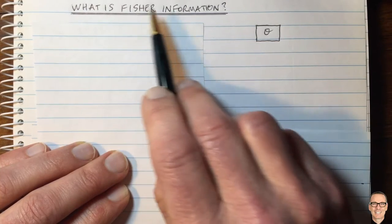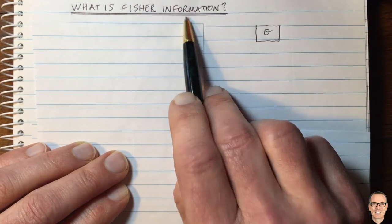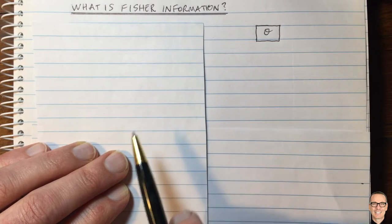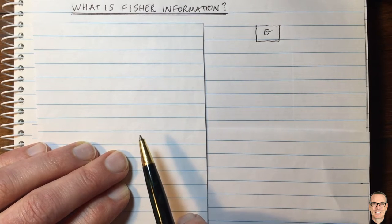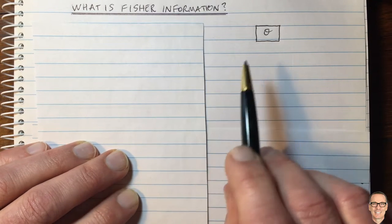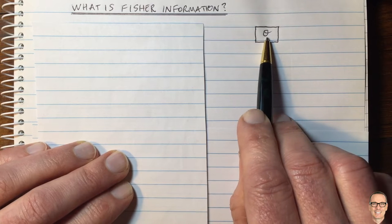What is Fisher information? It's a way of measuring the information content in a set of measurements that you might make about a parameter.